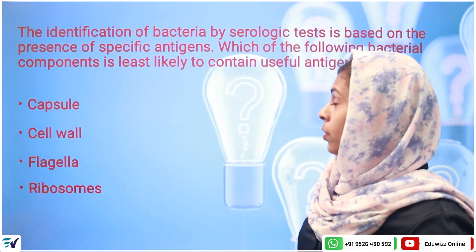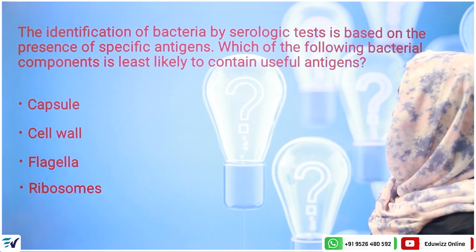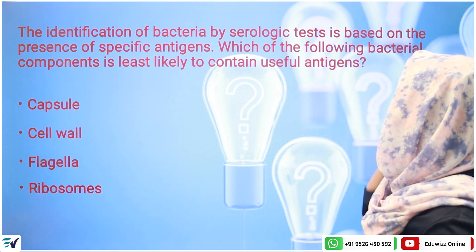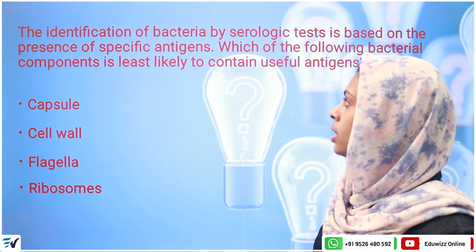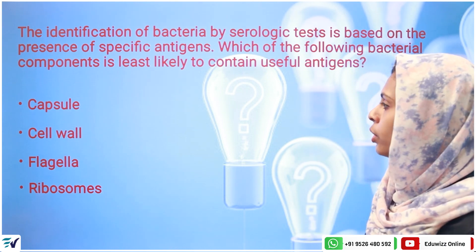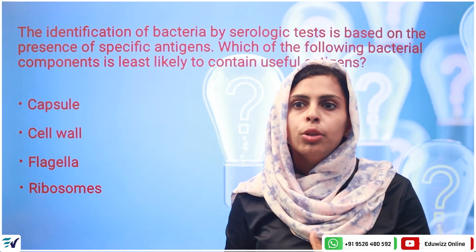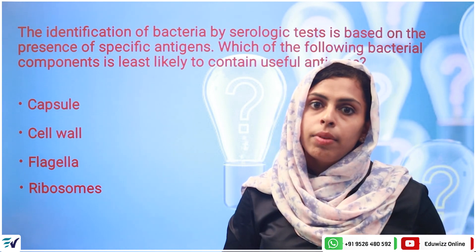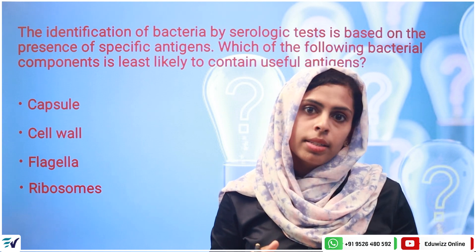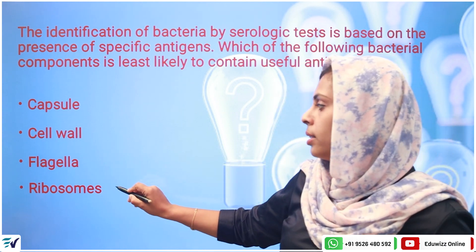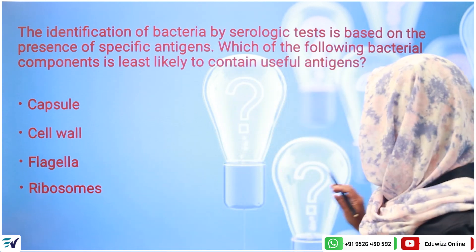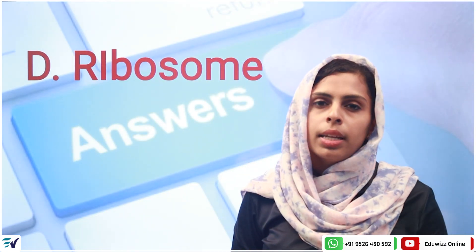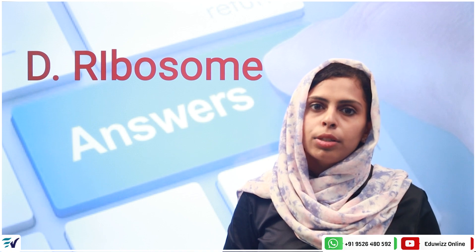Next question: The identification of bacteria by serological tests is based on the presence of specific antigens. Which of the following bacterial components is least likely to contain useful antigens? The options include capsule antigen, somatic (O) antigen, flagellar (H) antigen, and ribosome. The answer is ribosome — it is the least useful antigen in serological identification.